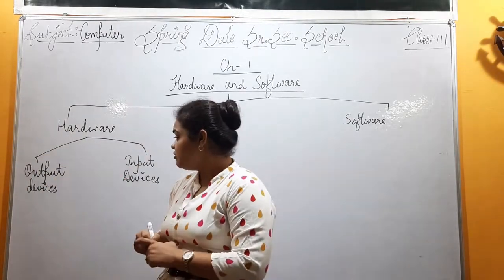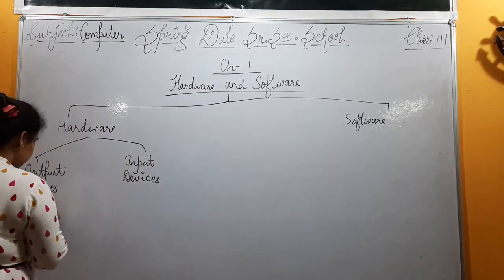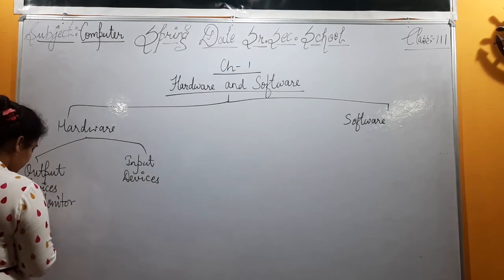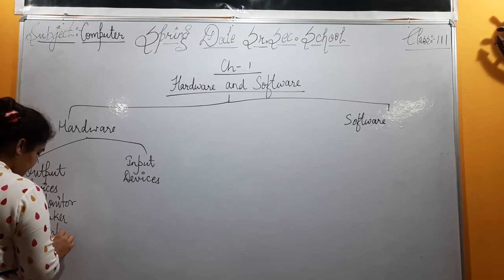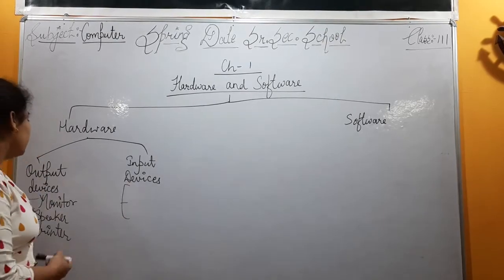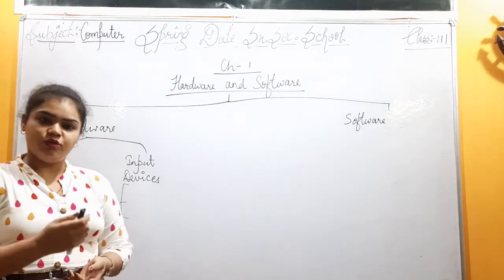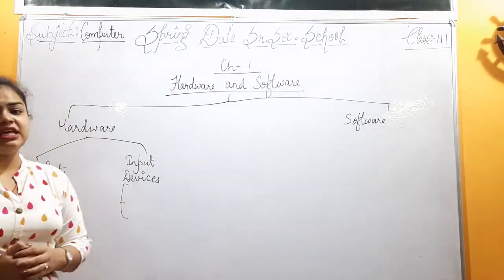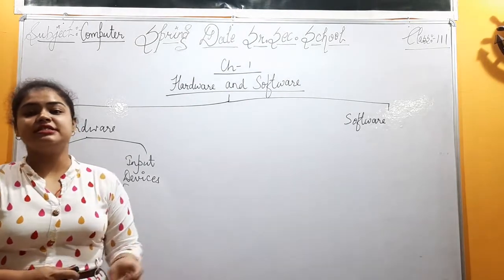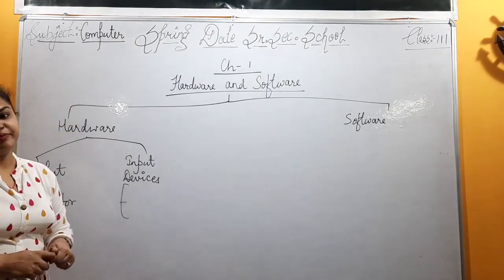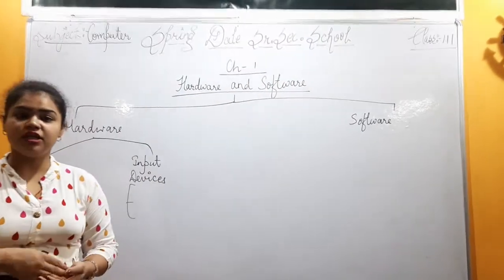The output devices are monitor, speaker, and printer. What is the use of the monitor? Whatever instructions we give to the computer, the result we see on the screen — that is the monitor. The monitor shows us the result. Next is the speaker: whatever music or sound we play on the computer, we hear it through the speaker.